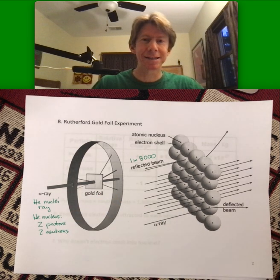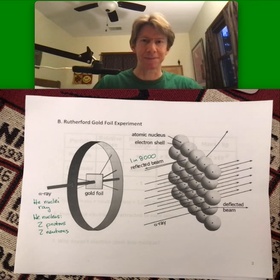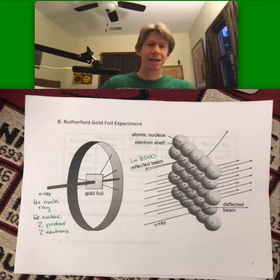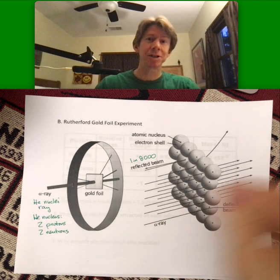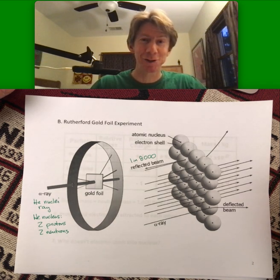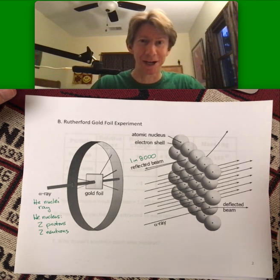And that, at the time, was shocking. Rutherford was known to have said at the time that it's like you took a 15-inch artillery shell from the military and fired it at a piece of tissue paper and it bounced back. The tissue paper was what they thought the atom was. It was actually called the bread pudding model, something that is pretty British, although I do enjoy a good bread pudding myself.